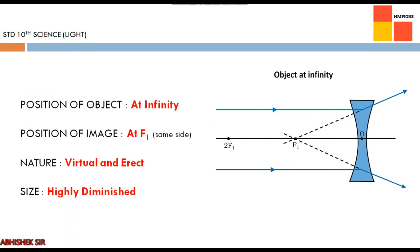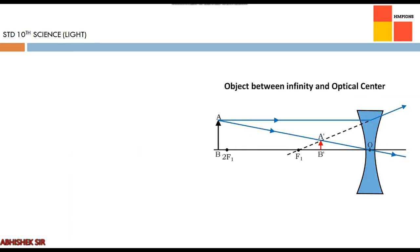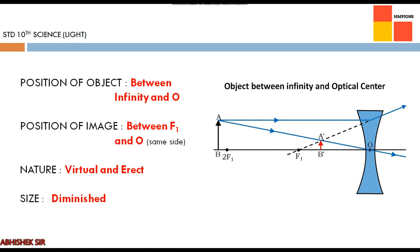Now for concave lens, we see two cases. First — object at infinity: light rays come and diverge, and extending them back they combine at f1 on the same side. Since we elongate the rays backward, nature is virtual and erect, and size is highly diminished. Second — object between infinity and optical center: image is again formed on the same side between f1 and O. It is virtual and erect, and diminished — smaller than the object.